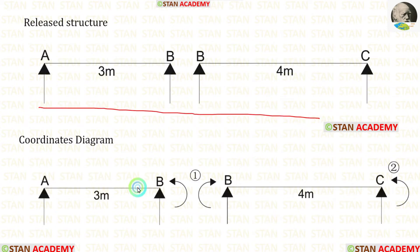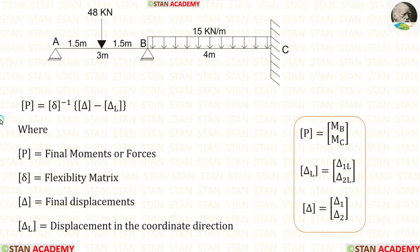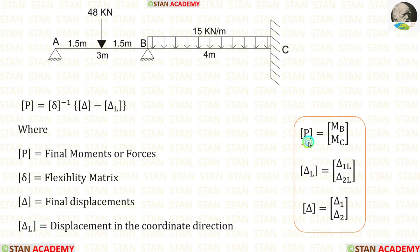We have made the released structure. Now let us make the coordinates diagram. In this analysis, there are two coordinates — at points B and C — because in these points only, we have released the moments. Let us see the formula to calculate the final moments: P matrix = delta matrix inverse × (delta matrix − delta L matrix). Here, P matrix is the final moments or forces, delta matrix is the flexibility matrix, delta matrix is the final displacements, and delta L matrix is the displacement in the coordinate direction. Each of these matrices will have two values since there are two coordinates. Inside the P matrix, we will have the final moments MB and MC.